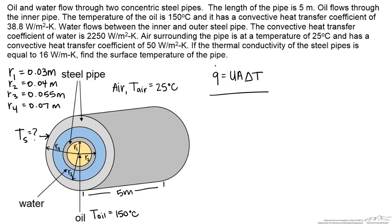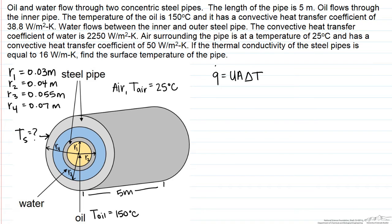The first thing we need to do is find the overall heat transfer coefficient. Our Q will stay constant, but because it is a radial system, we cannot use heat flux. Therefore, instead of finding U, what we have to find is U times A. So let's start with finding UA by calculating each one of the resistances.